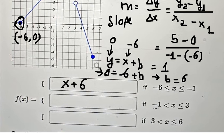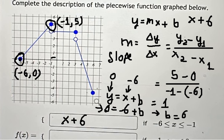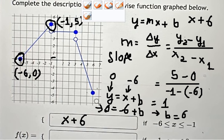Now we go from negative one to three — this is the second piece. We can see that this is a horizontal line, and it goes through y = four, so we have y = 4.